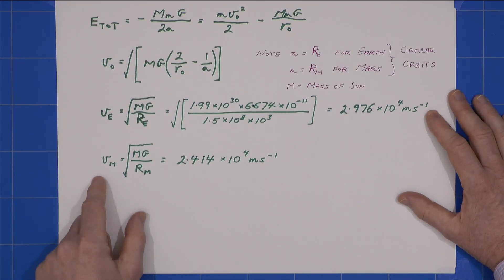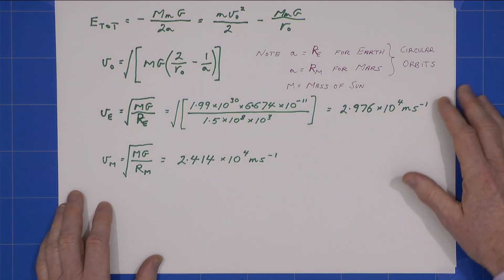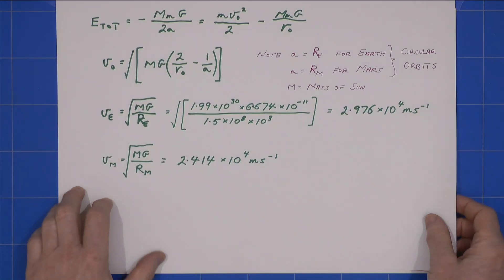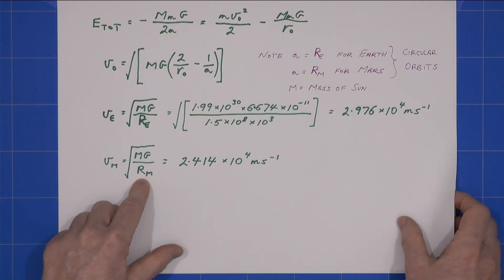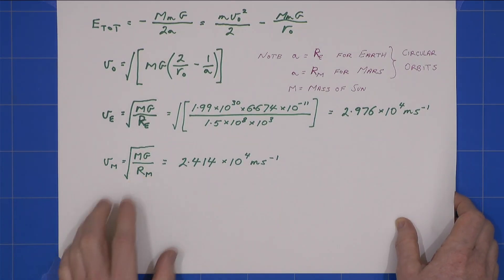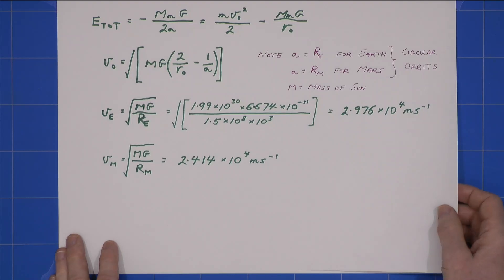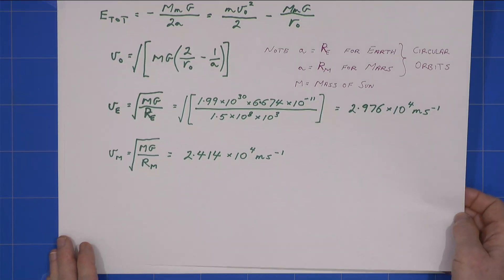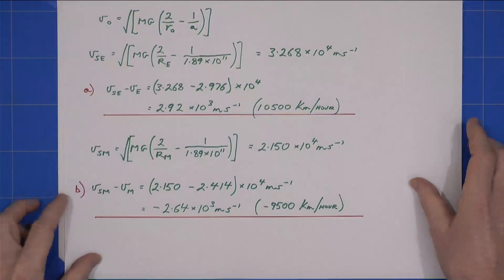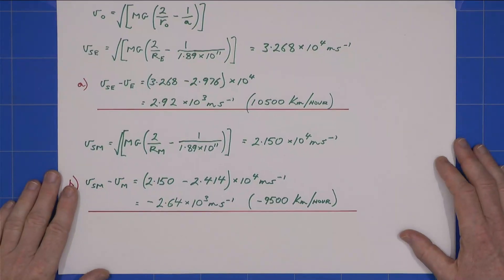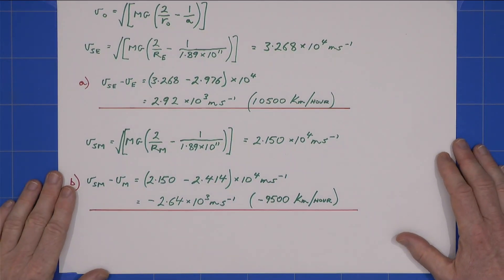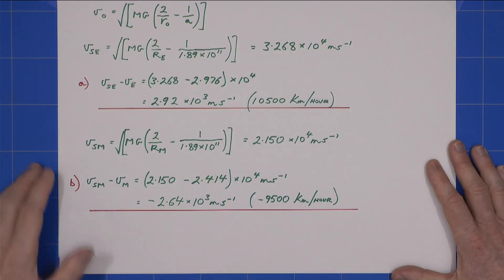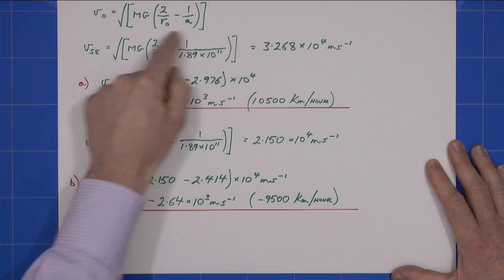Similarly for Mars, using r_Mars instead of r_Earth, I get that value there. So we now know the speeds of both planets.